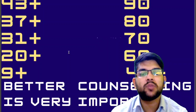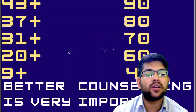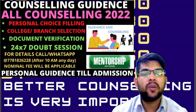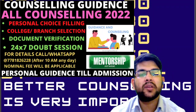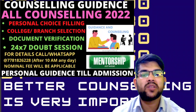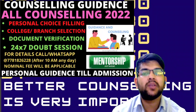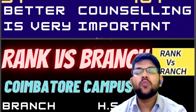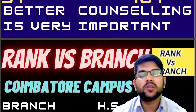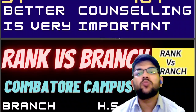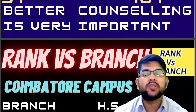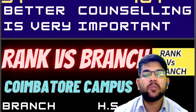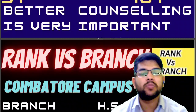I will be guiding you for the complete counseling process of AEEE as well as other counseling — VIT EE, Manipal, COMEDK, KCET, JMI, and JEE Advanced, BIT SAT. For everything I will be guiding you once you register with my guidance. Now, talking about the percentile versus branch — what would be the minimum percentile to get branches at all campuses of Amrita University.